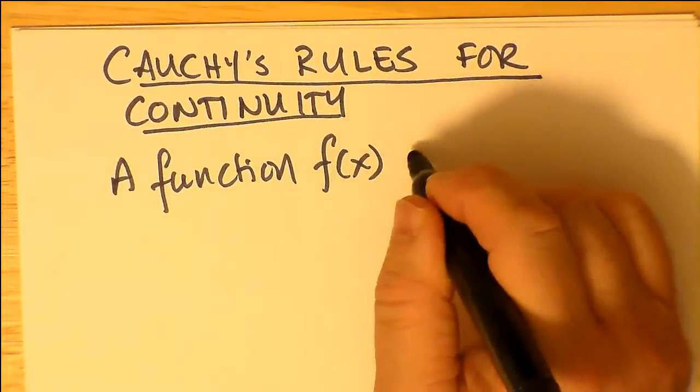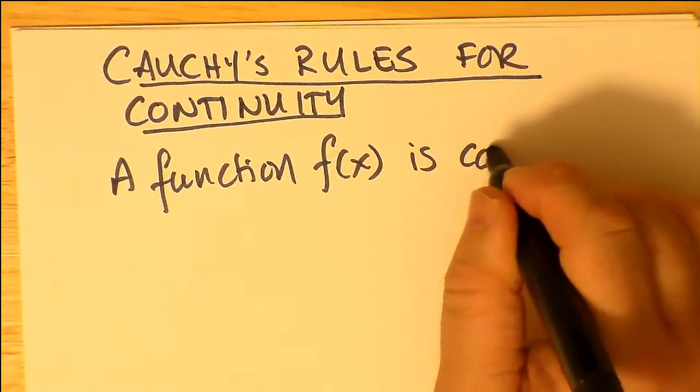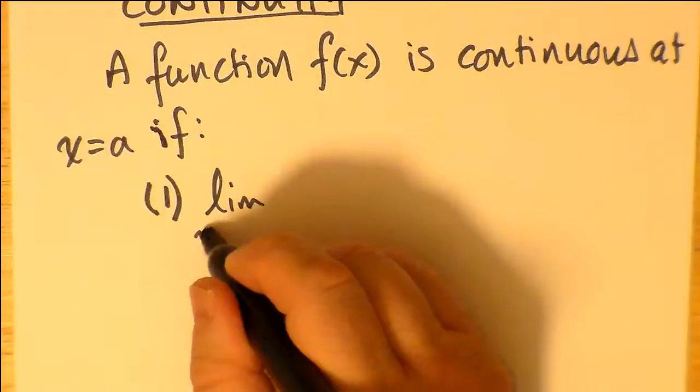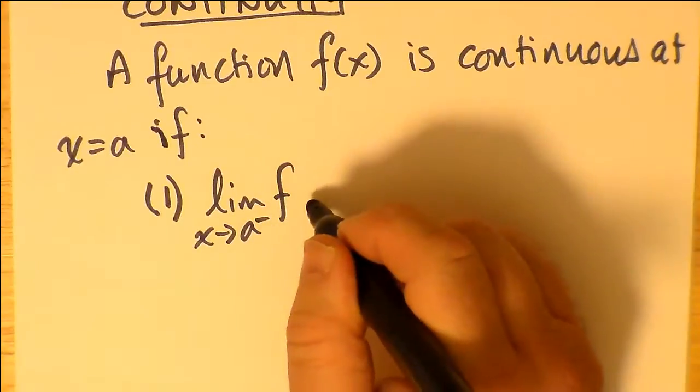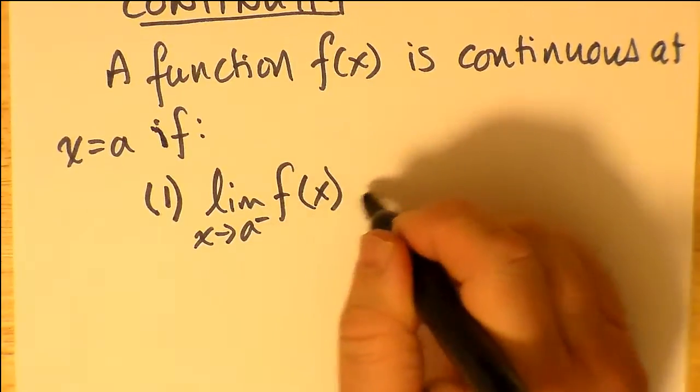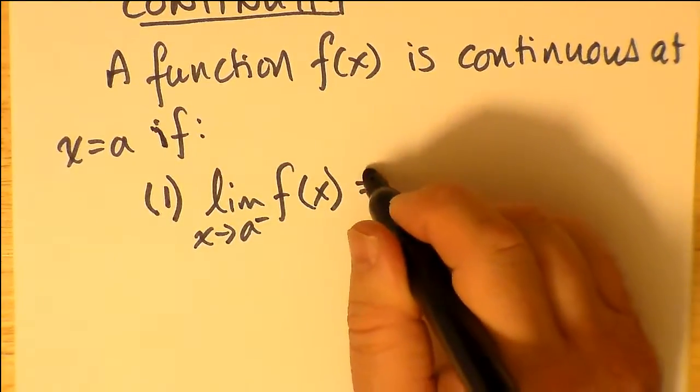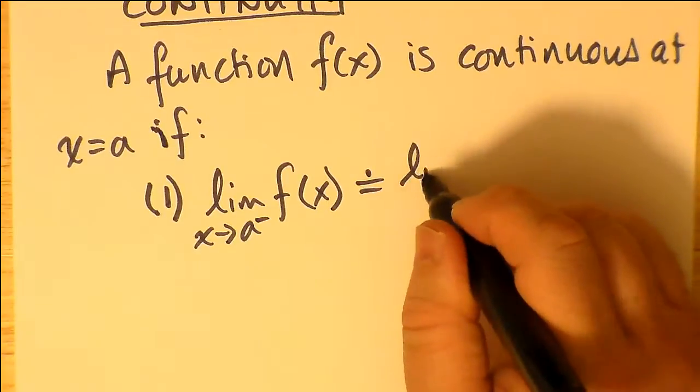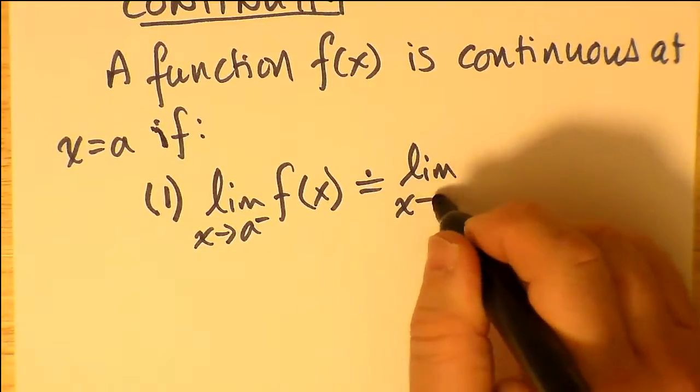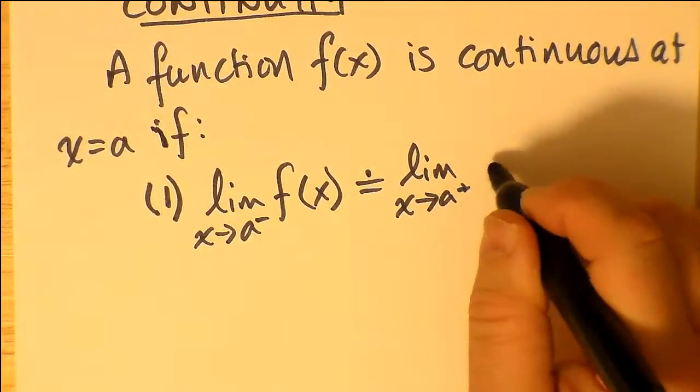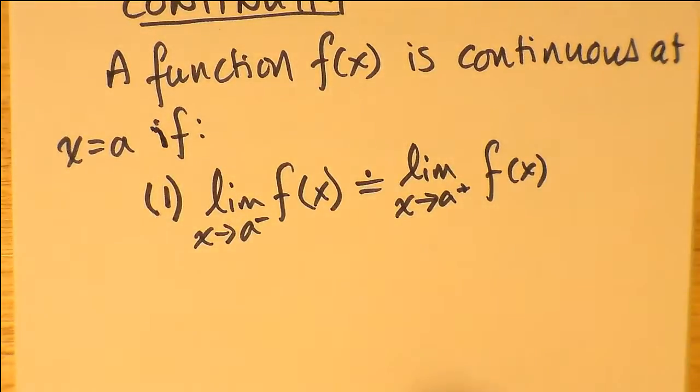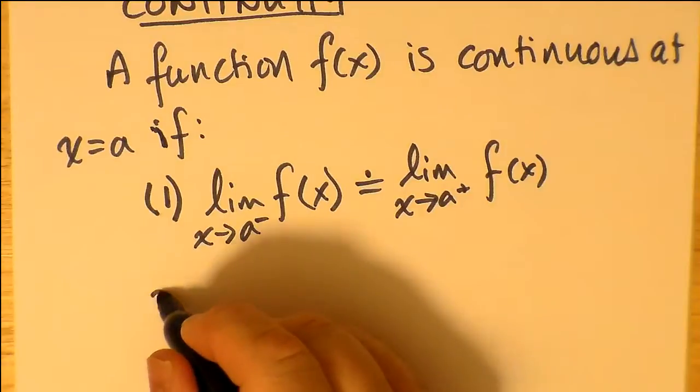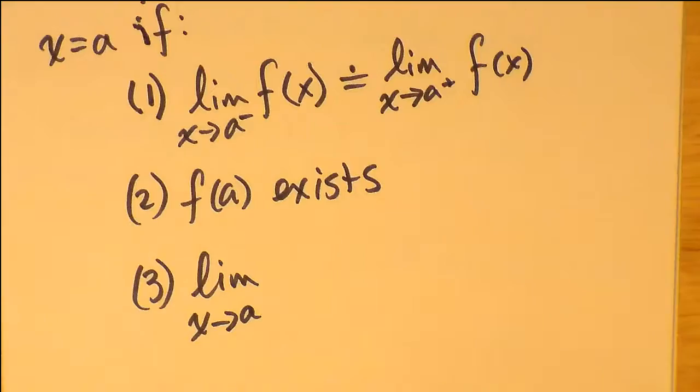So a function f(x) is continuous at x equals a if, first of all, the limit as x approaches a from the left is about equal to the limit as x approaches a from the right. Technically, if you were serious about limits, they should be exactly equal. But we're using estimation in this course, so we're just going to estimate a value very close to a.